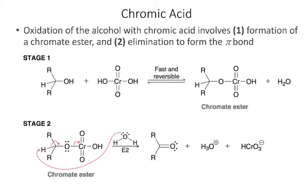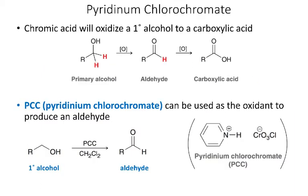Looking briefly at the mechanism, it occurs in two stages. Essentially, the alcohol reacts with chromic acid to form a chromate ester, and then we have an elimination reaction where a carbon-oxygen double bond forms rather than a carbon-carbon double bond — similar to an E2 reaction with proton transfer, the C–H bond becomes a pi bond, and the leaving group departs. This chromic acid reaction oxidizes a secondary alcohol to a ketone, but an aldehyde will be further oxidized to a carboxylic acid, so chromic acid takes a primary alcohol all the way to the carboxylic acid.